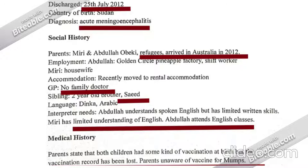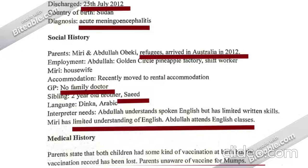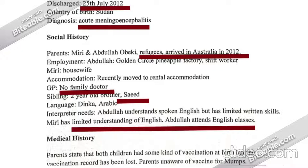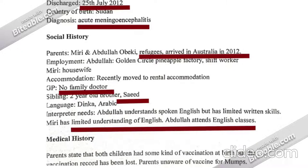Language: Dinka and Arabic — interpreter needed. Abdullah understands spoken English but has limited written skills. Mary has limited understanding of English. Abdullah attends English classes. Medical history: parents state that both children had some kind of vaccination, but the vaccination record has been lost. Parents are unaware of vaccination for mumps.